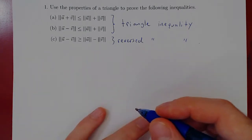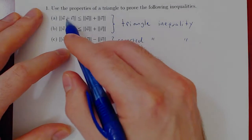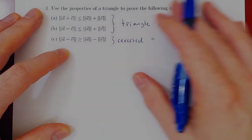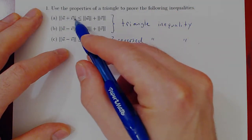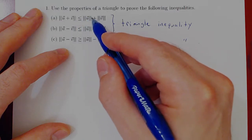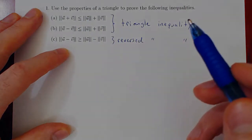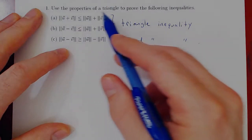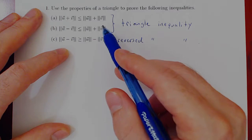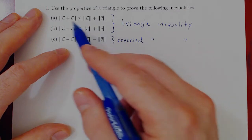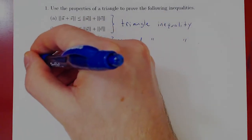Look at the first inequality. It says: suppose you have two vectors u and v. The norm of u plus v will be at most the norm of u plus the norm of v. The question asks us to use properties of a triangle to prove these inequalities. So we have two vectors, u and v — let's try to construct a triangle from them.